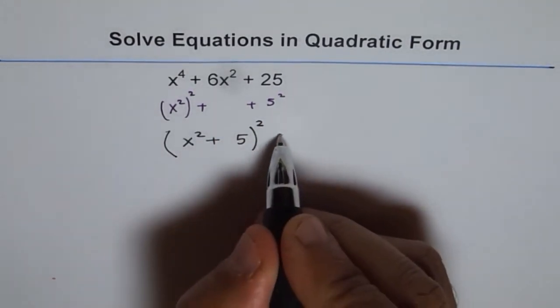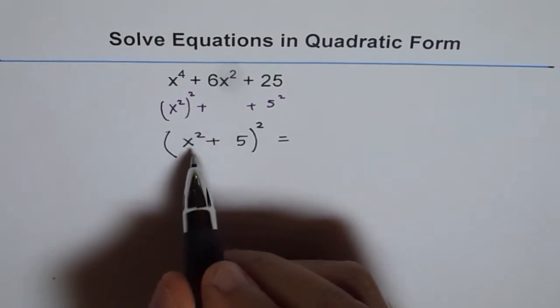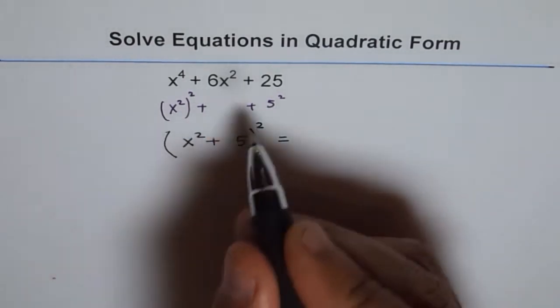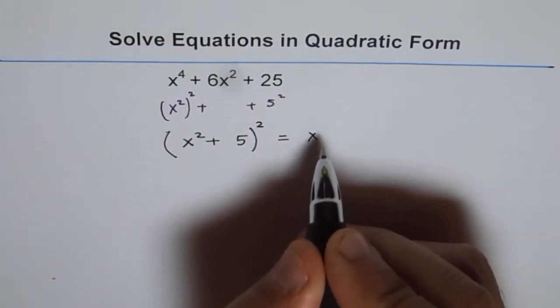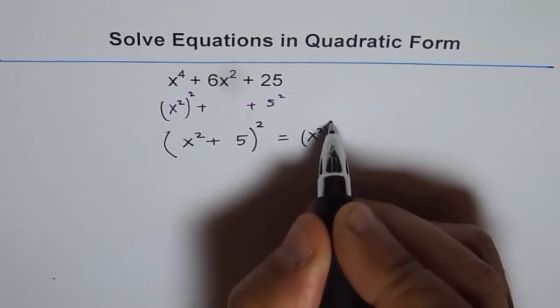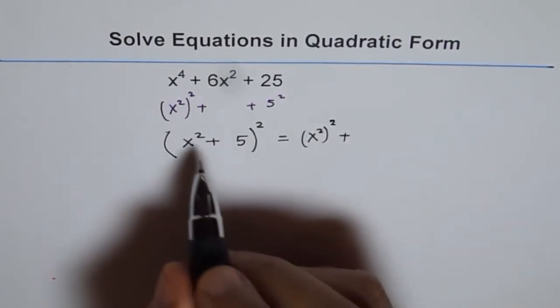(x^2 + 5)^2 is (x^2)^2, right? That is, let me write this as (x^2)^2 plus 2 times AB, which is 2 times x^2.